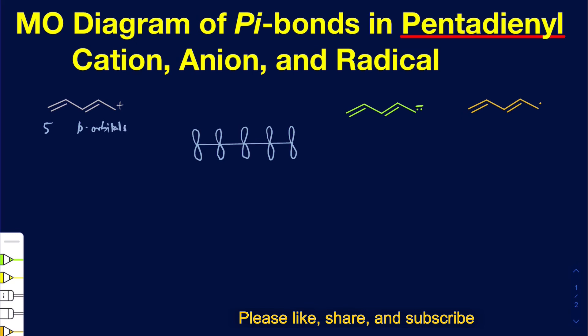The same story applies to the anion and the radical. In every single case, you're going to have a five p orbital set that is unhybridized. In addition to that, you also want to count how many pi electrons you're going to have that are conjugated in the whole system. In the case of a cation, we don't have any electron where the positive charge is, but we do have electrons on those pi bonds. As a result, this gives me a system of four pi electrons.